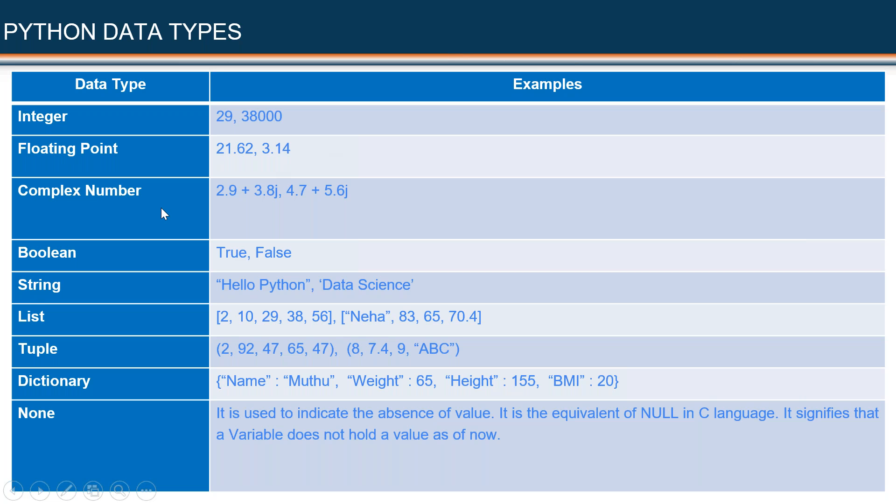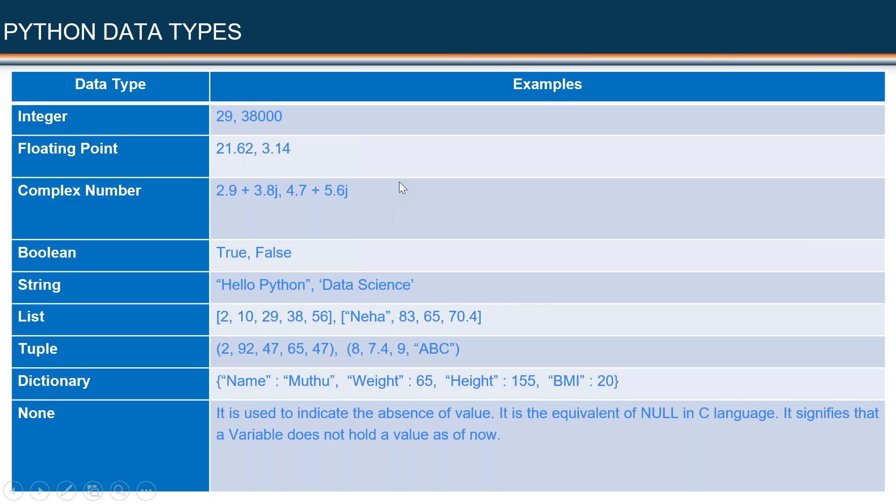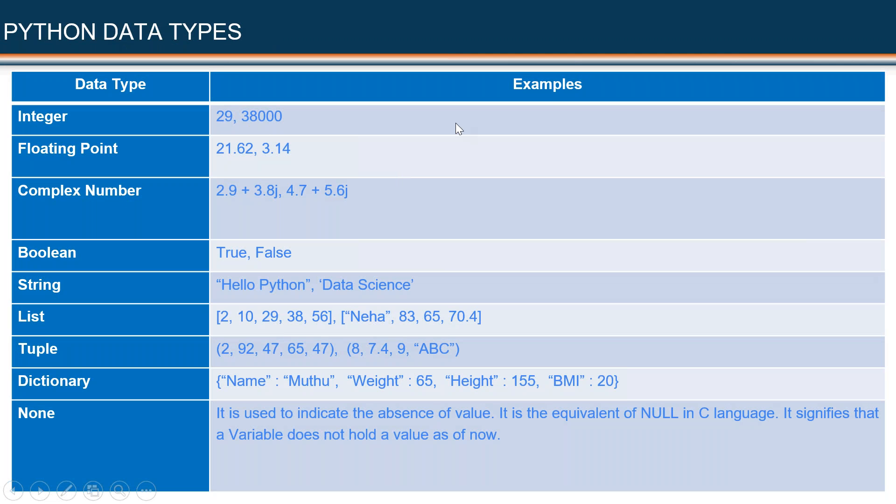Now, the third one is complex number data type. In the good old days, when we were in school, we talked about the complex number. The familiar form of the complex number is X plus Yi. Here also, we are writing it in the same form. We very rarely use this data type.